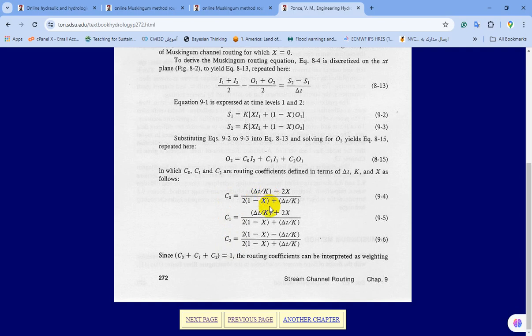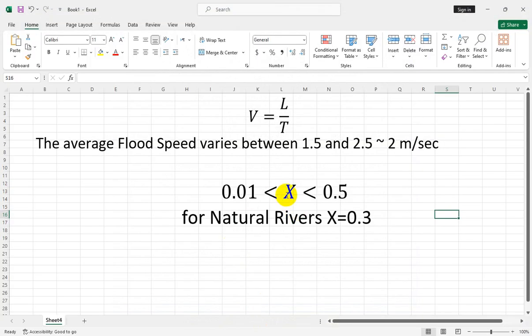K and X, as I mentioned, are the Muskingum parameters and must be calibrated based on observed data sets. However, if you are in data-limited or data-scarce regions, you must find appropriate methods to estimate or provide reasonable estimations of these variables.